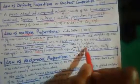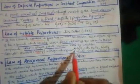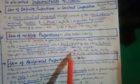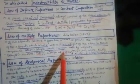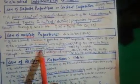The weight of one element, which combines with a fixed weight of the other element in these compounds, will bear a simple whole number ratio, as we will see in the table.